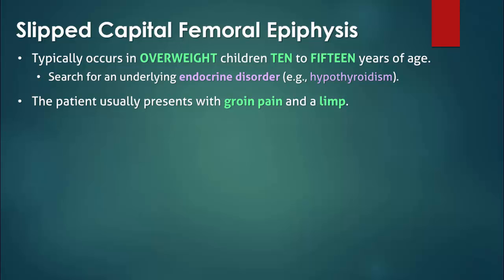Patients may present with an acute onset of severe pain, but more commonly they experience a chronic limp and a dull, aching pain in the groin. The location of the pain is variable. For example, some patients only experience pain in the thigh or knee, though these areas would not be tender on palpation.